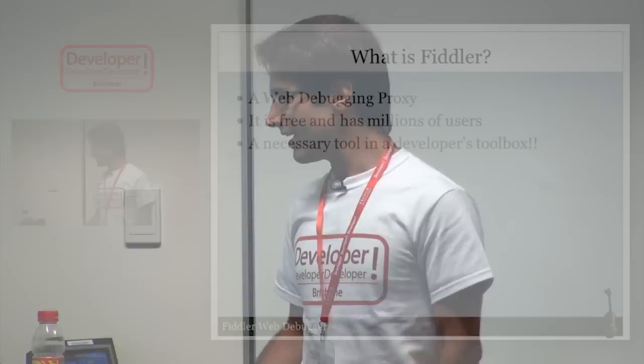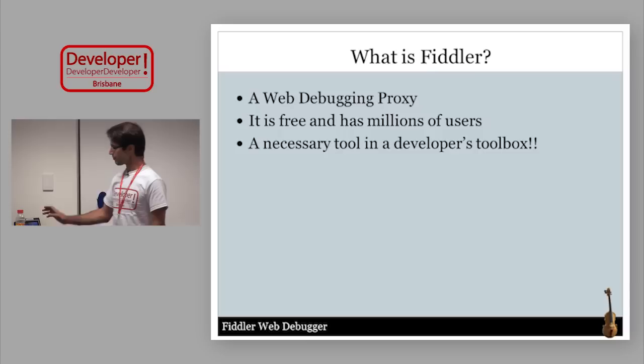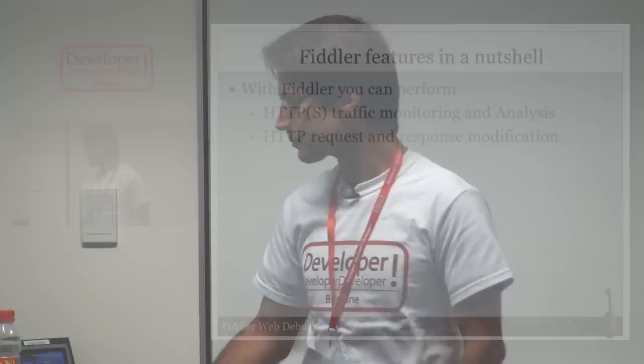What is Fiddler? Fiddler is a web debugging proxy — like an HTTP proxy that allows you to monitor your HTTP traffic and do debugging. It's free, it's not open source, and it's got a rather large user base. If you're a web developer, a distributed systems developer, or just any developer, you can use Fiddler. I say that because I once saw a YouTube video of a housewife using Fiddler to hack a Facebook Flash game because she couldn't get past a level — which was really entertaining to watch.